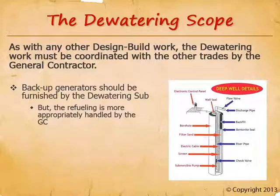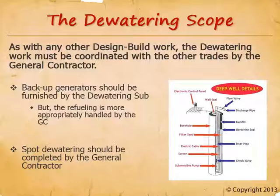Emergency generators need to be exercised about once a week, and that burns fuel. The refueling is actually usually done by the general contractor, simply because the dewatering sub isn't on site every day and it's really inefficient for them to manage refueling once a week. Be sure this refueling is covered — not only in the budget, but also on site. If you've got the generators scheduled to be exercised on, say, Wednesday mornings at 8 to 9 a.m., be sure you've got a fuel truck scheduled to come in and top them off later that morning. Spot dewatering generally consists of a couple laborers walking around the site with a pump and discharge hose getting ponding water out of the excavation — this is most efficiently completed by the general contractor, as dewatering subcontractors aren't on site every day nor do they have the manpower for this.